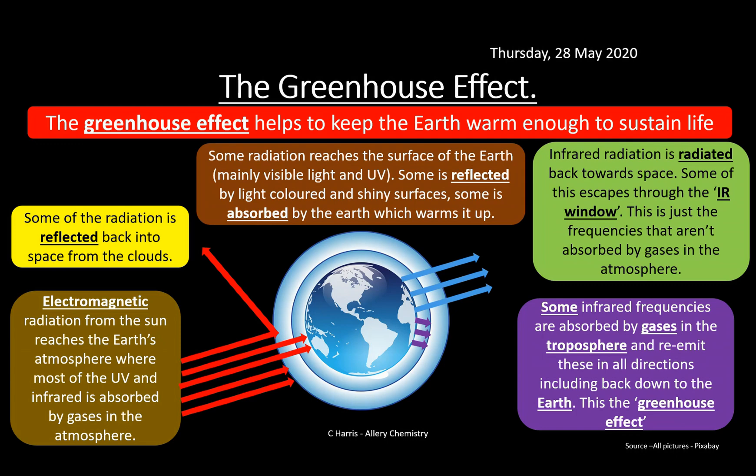Some of the heat released from the earth is actually being trapped by gases in the troposphere. We need to identify where these gases have come from, because too much of them means too much heat is retained. This leads to bizarre changes in weather patterns, melting icebergs, and disrupted habitats. Scientists have been observing this greenhouse effect for many, many years now.